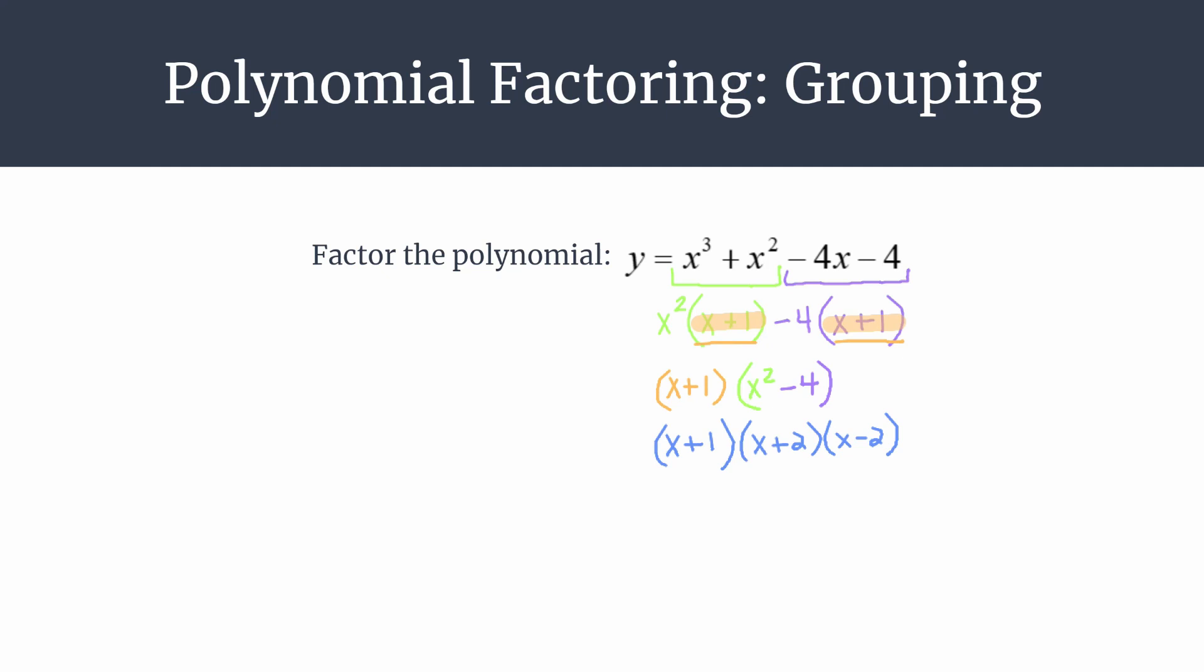The whole point of being able to factor, why we're reviewing some of these factoring methods, is so that we can easily see our zeros or x-intercepts when we want to sketch a graph. You can see the corresponding zeros would be negative 1, negative 2, and 2, and this will be really helpful as you create a graph for this polynomial.